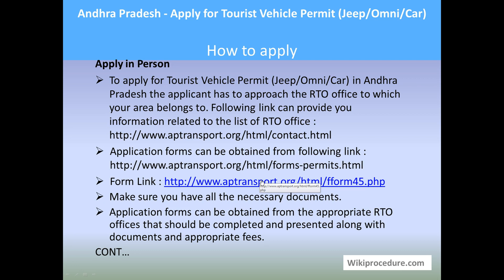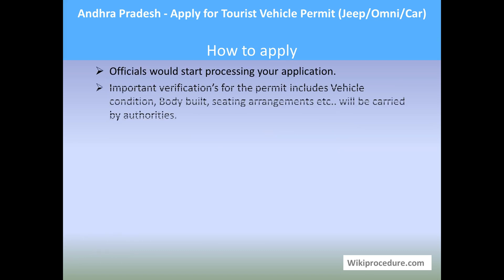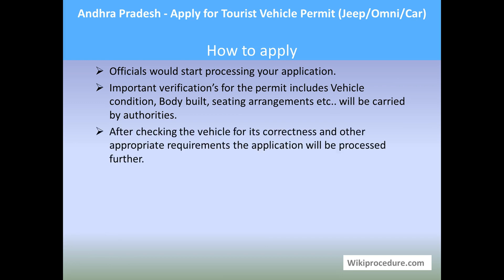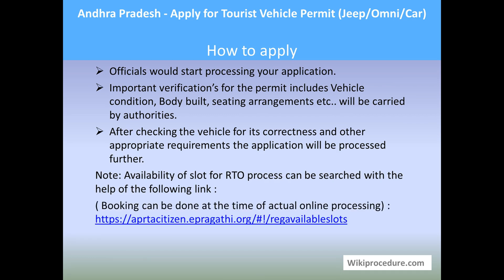Application forms can also be obtained directly from the RTO office on your visit. Fill them out, attach all the documents, and submit to an officer there. The officer will indicate the amount and the counter where you need to pay. Go to the counter, pay the fees, and submit all your documents so the authorities will start processing your application. An important verification for the vehicle — including body build condition and seating arrangements — will be carried out, and details you have presented will be verified before granting the tourist vehicle permit.